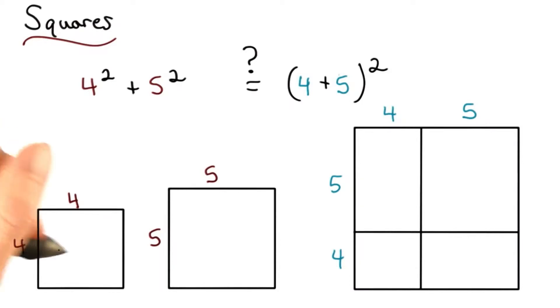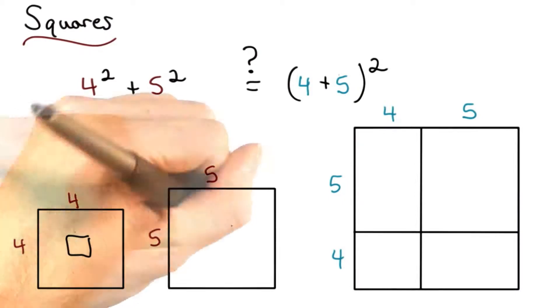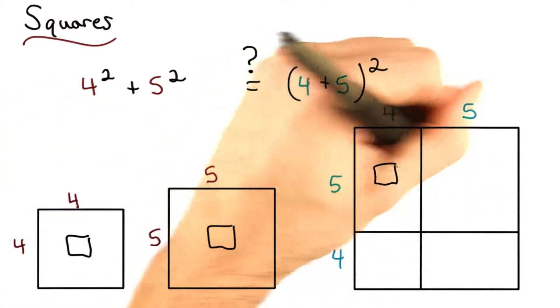What I want you to do is come up with the area of each of these squares. Find the area of this square, this square, and then this square has 4 different regions. I want you to find the area of each one.